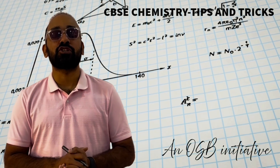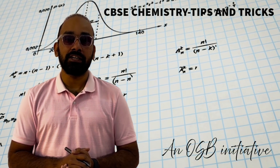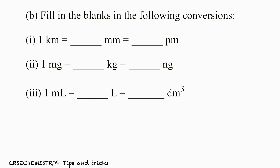Let us study chemistry together with CPSC chemistry tips and tricks. Fill in the blanks in the following conversions. The first one is: 1 km is equal to ___ mm, that is equal to ___ picometer.